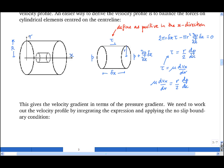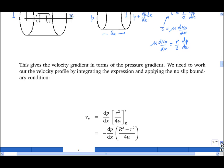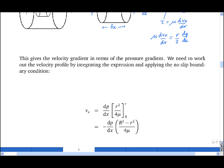So this gives us the velocity gradient in terms of the pressure gradient. We need to work out the velocity profile by integrating this and applying the no-slip boundary condition. So I can rearrange this expression into the integral of dvx is equal to the integral of r upon 2 mu dp by dx dr.